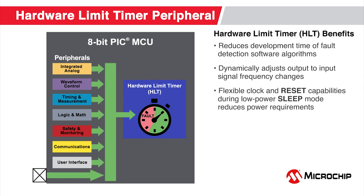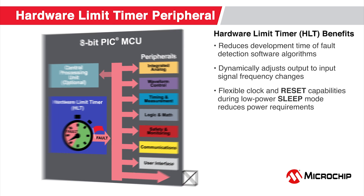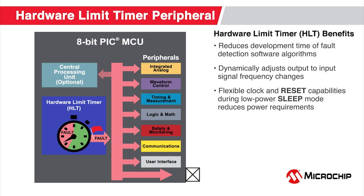The input signal can be dynamically routed from a variety of internal and external sources, including peripheral outputs. A missed event notification can be interconnected with internal or external hardware to automatically trigger peripheral functions such as the ADC conversion and CRC memory scan, or interface with hardware logic to correct the system issue, often independent of the CPU.